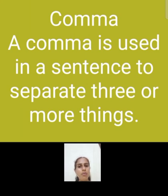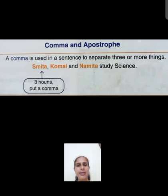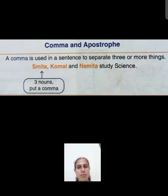A comma is used in a sentence to separate three or more things. Teen ya phir teen se adhik vastuon ko separate karne ke liye comma use kiya jata hai. Example: Samita, Komal and Namita study science. Is example mein Samita, Komal and Namita teen nouns hain. First noun ke baad humne comma add kiya hai. Agar humare paas teen nouns hain, tab hum first noun ke baad comma add karenge.